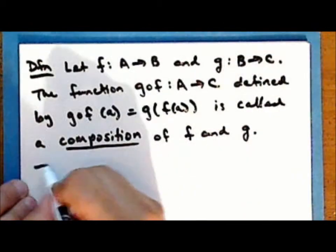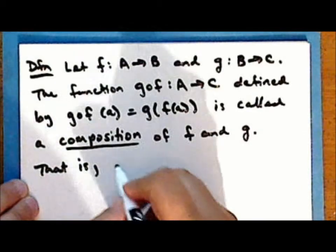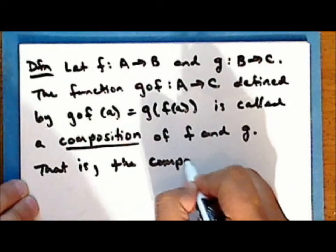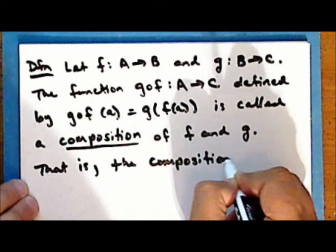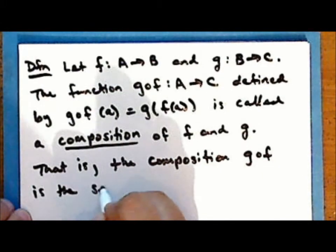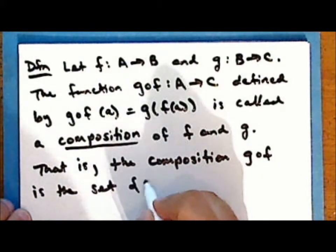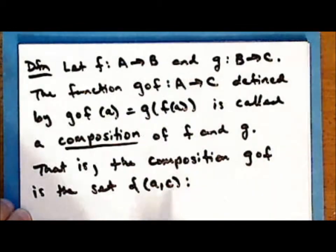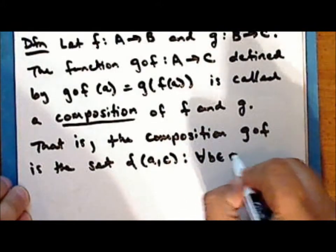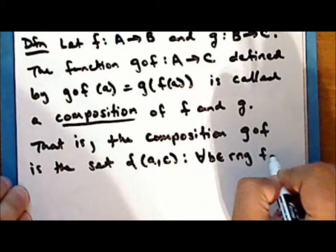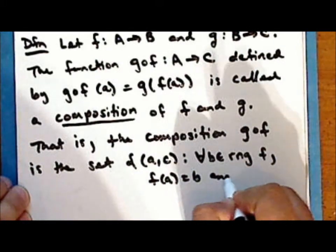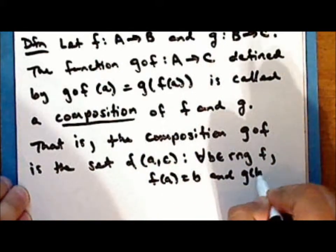That is, the composition g∘f is the set of ordered pairs (a, c) such that for every element b in the range of f, f(a) = b and g(b) = c.